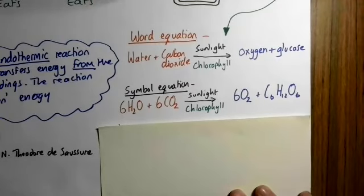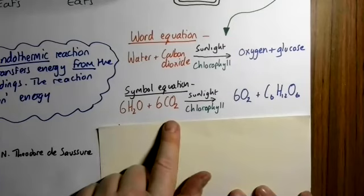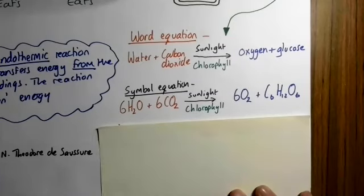the formula for water is H2O, the formula for carbon dioxide, CO2. So we've got six lots of H2O reacting with six lots of CO2 in the presence of sunlight and chlorophyll produces six lots of O2 and one lot of C6H12O6, which is the chemical formula for glucose. So this is the symbol or chemical equation for photosynthesis.